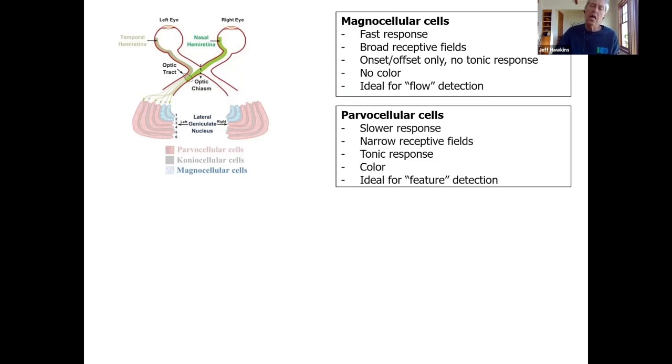The parvocellular cells by contrast are slower, have very narrow receptive fields, they're finely tuned. They show tonic response - if I put a dot of light into a receptive field, it stays active. They represent color. This is ideal for feature detection. I hadn't thought about this when I presented last time, but it's perfect, exactly what I said.